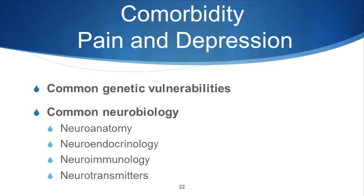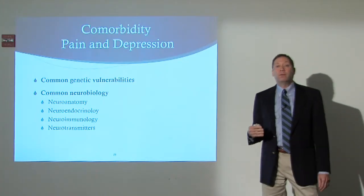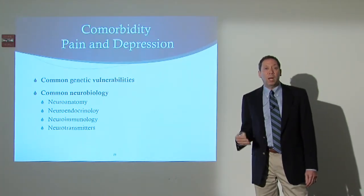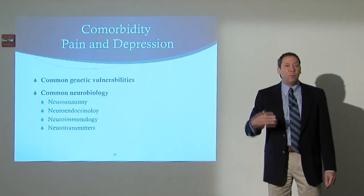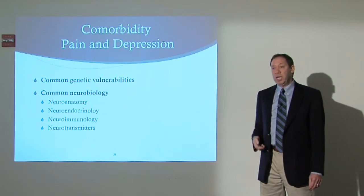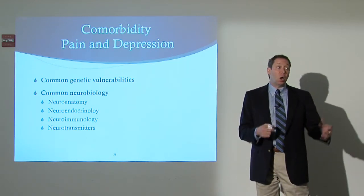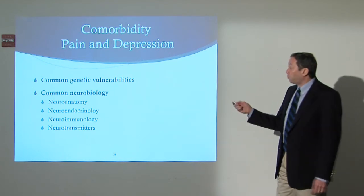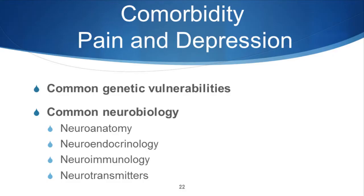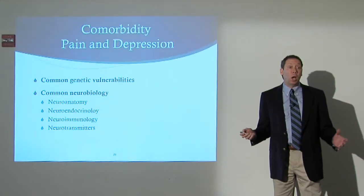There also are common genetic vulnerabilities. In individuals who suffer with both chronic pain and chronic depression, we see a tendency toward a hyperinflammatory state and the genes that cause the expression of these states. So we've got common neurobiology for both these diseases — neuroanatomy, neuroendocrinology, neuroimmunology, and neurotransmitters. There's a lot going on.